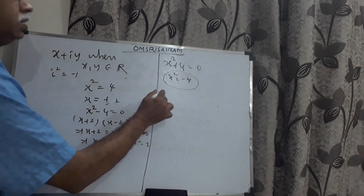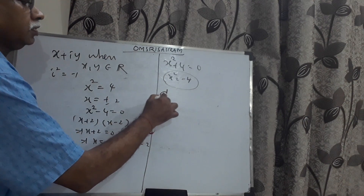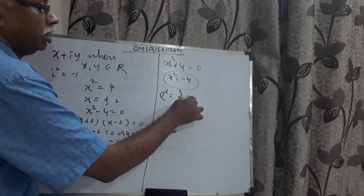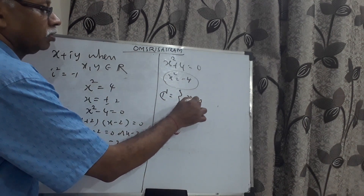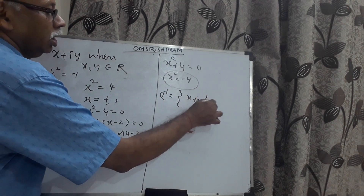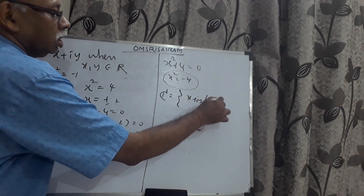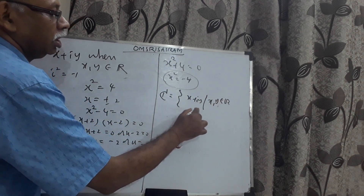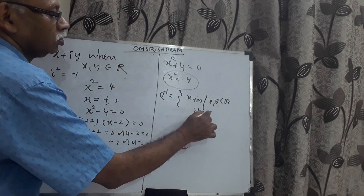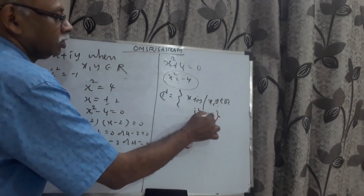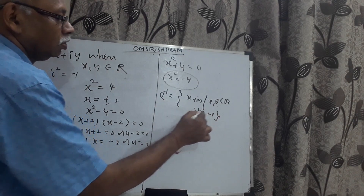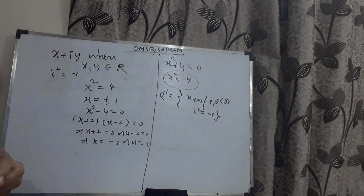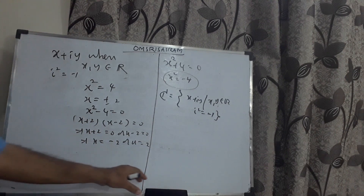We can write it like this: capital C is equal to the set of all numbers of the form x plus iy, where x and y are real numbers and i squared is equal to minus one. Instead of saying i equals root of minus one, it is more refined to say i squared equals minus one.